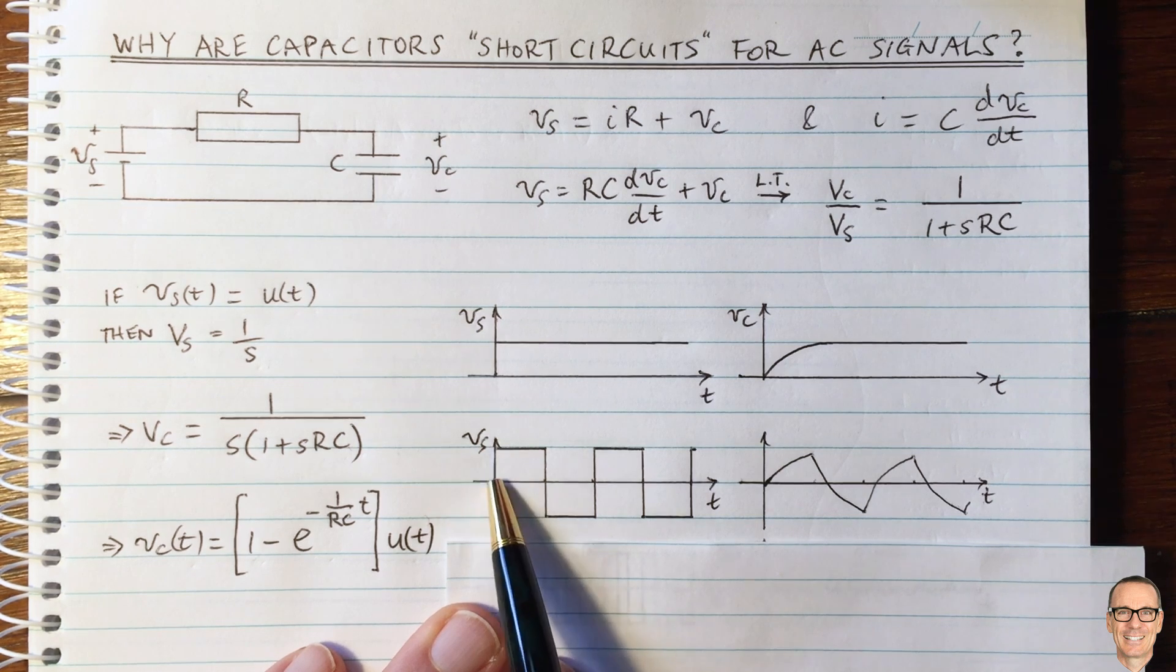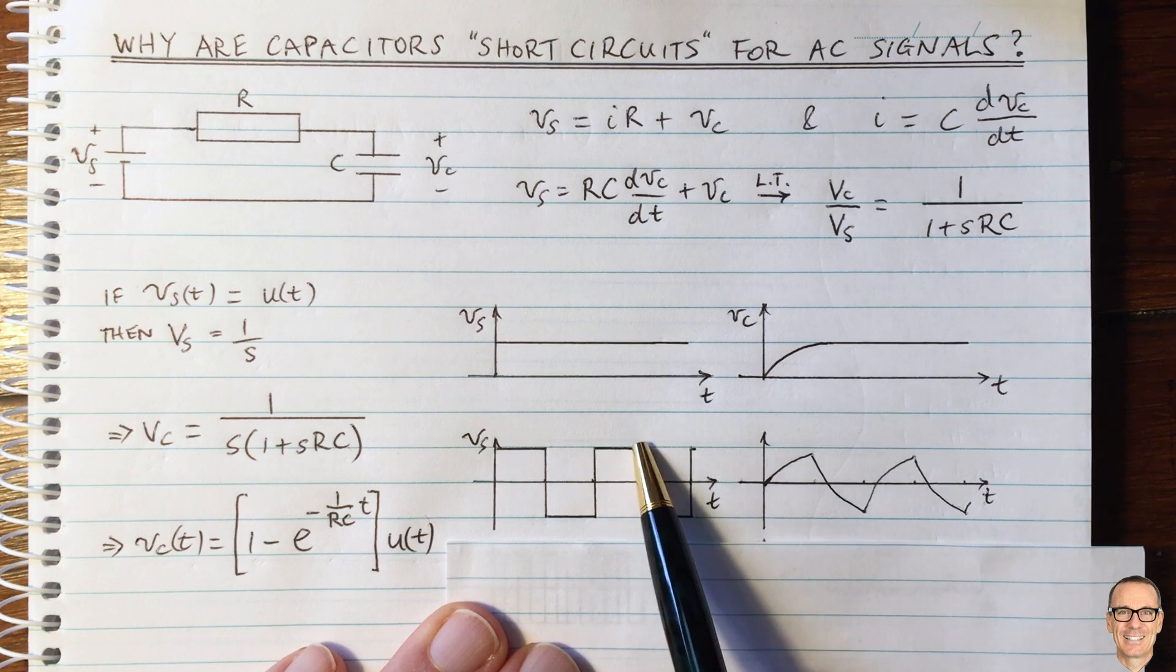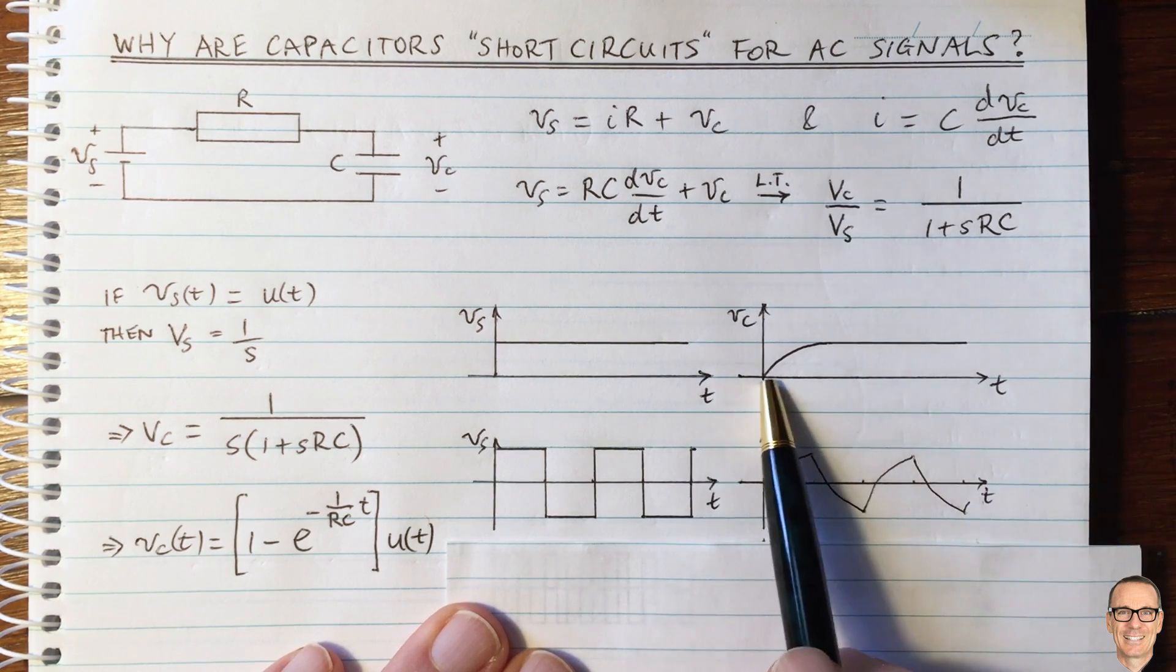And we're going to use this result of the step function to help understand the square function. Let's say our input voltage went up to a constant and then down to a negative constant, up to that constant again, back to the negative in time.